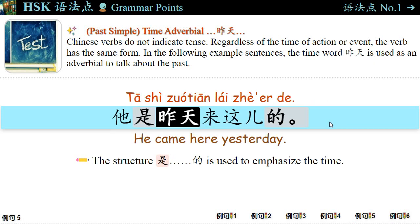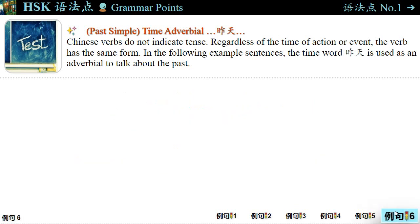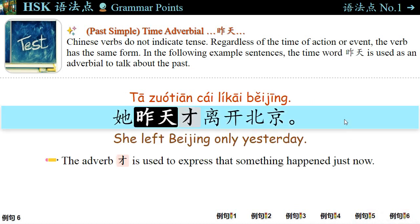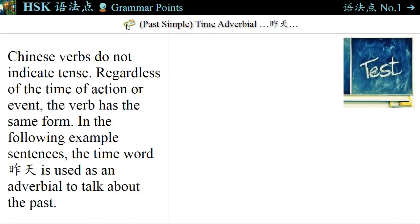例句五: 她是昨天来这儿的。 She came here yesterday. The structure 是...的 is used to emphasize the time. 例句六: 她昨天才离开北京。 She left Beijing only yesterday. The adverb 才 is used to express that something happened just recently. The time adverb 昨天 is used throughout these examples.